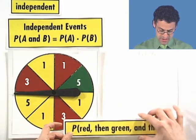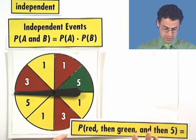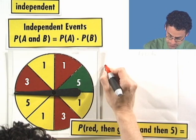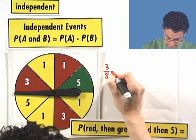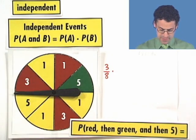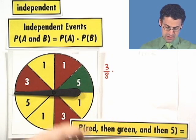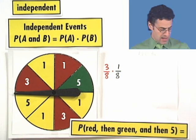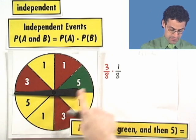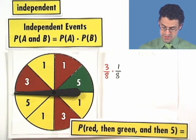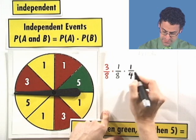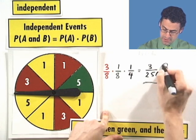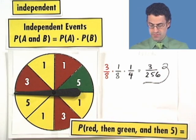What's the probability of red? There's one-eighth here, two-eighths here, and another eighth here for red — that's three-eighths. We multiply that, since these are independent events, by the probability of green, which is very rare — only one of the eighths, so one-eighth. Then the probability of a five: there's a five here and a five here, so that's two-eighths, which equals one-fourth. So we have three-eighths times one-eighth times one-fourth, which gives us three over 256. As you can see, the probability is very low — three out of 256.